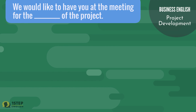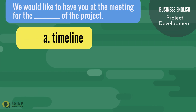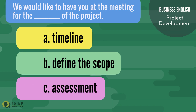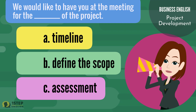'We would like to have you at the meeting for the ___ of the project.' Letter A: timeline. Letter B: define the scope. Letter C: assessment. The correct answer is letter C, assessment. 'We would like to have you in the meeting for the assessment of the project.'